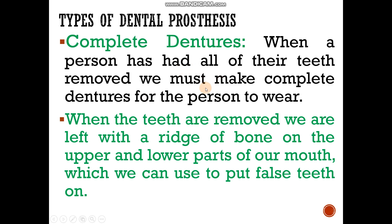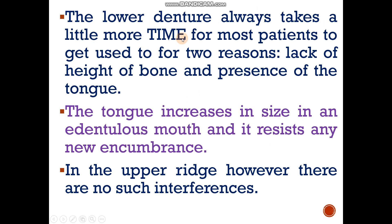The lower denture always takes a little more time for most patients to get used to, for two reasons: one is the lack of height of the bone in the lower area, and the other is the presence of the tongue in the lower area. The tongue is not present in the upper area. In an edentulous mouth — meaning a mouth lacking teeth — the tongue will increase in size. When we replace artificial teeth, the tongue resists the new encumbrance, meaning it treats the denture as a new burden and resists it. In the upper ridge, however, there is no such interference.